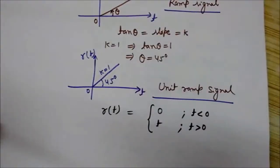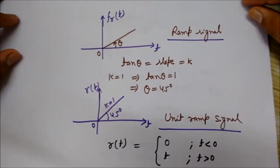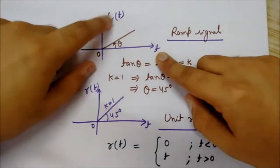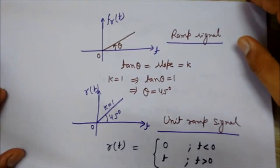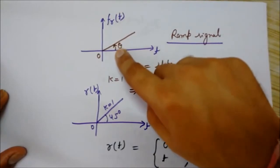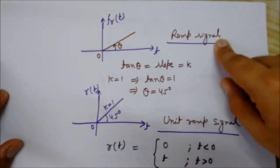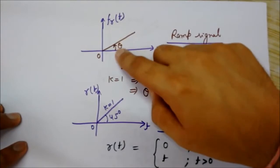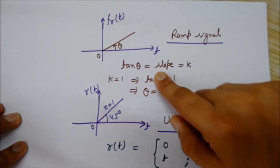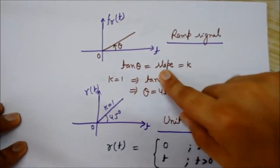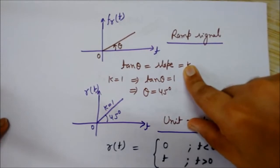Now I will show you the diagram and graph of the ramp signal. Here you can see the graph of the ramp signal — this is the ramp signal. You can see the shape of this ramp signal is like a ramp, having some slant making an angle of theta with the positive direction of the x-axis. Because of this shape it is called a ramp signal. We can find the slope of this straight line: tan theta equals the slope.